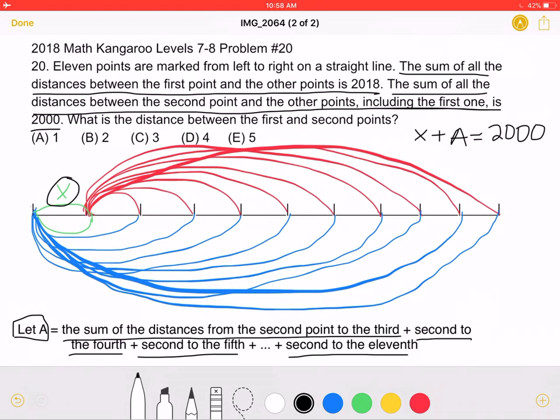So the distance between the first and second points is still going to be X. The distance from the first to the third point is going to be X plus the distance from the second point to the third point.